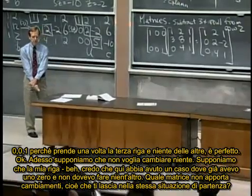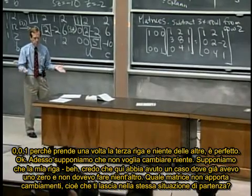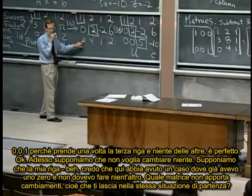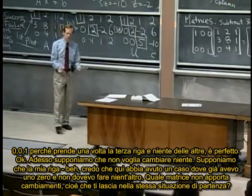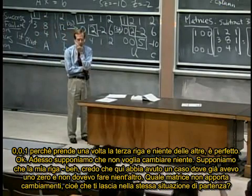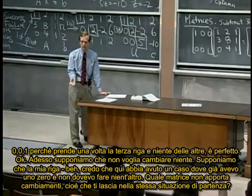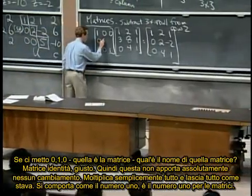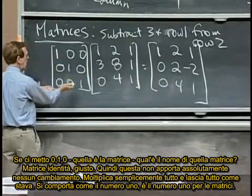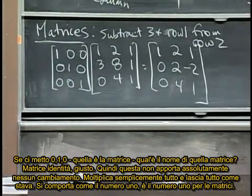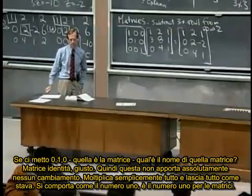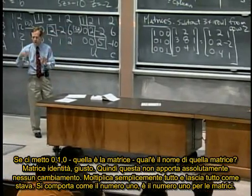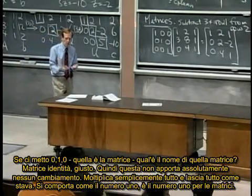Now, suppose I didn't want to do anything at all. Suppose my row, well, I guess maybe I had a case here when I already had a zero and didn't have to do anything. What matrix does nothing? Like, just leaves you where you were. If I put in zero, one, zero, that would be, that would be, that's the matrix, what's the name of that matrix? The identity matrix, right. So it does absolutely nothing, it just multiplies everything and leaves it where it is. It's like a one, like the number one for matrices.